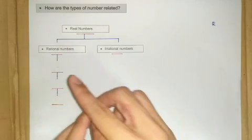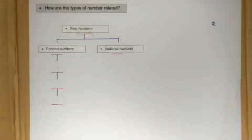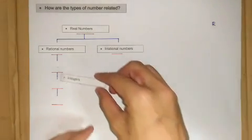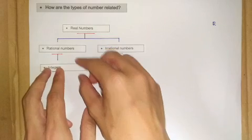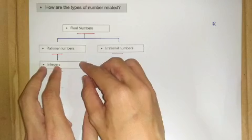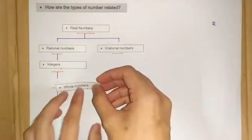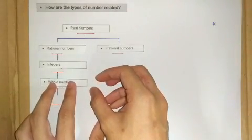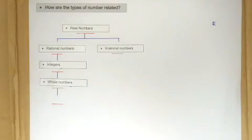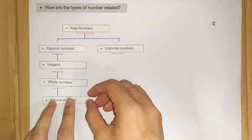So it's either rational or irrational. For some rational numbers, they can be classified as integers. And for some integers, they can be classified as whole numbers, and for some whole numbers they can be classified as natural numbers.